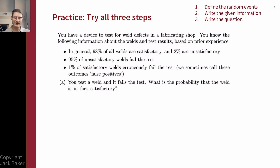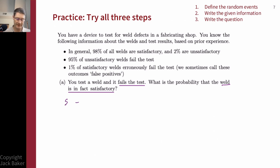Now let's put all three steps together with that original problem. Step one: define the random events. We're interested in welds being satisfactory and welds failing the test — those are our two events. Let S be the event that the weld is satisfactory, and F be the event that the weld fails the test. Step two: write down what am I given. The first sentence tells us about the setup. The bullet points give us the actual information.